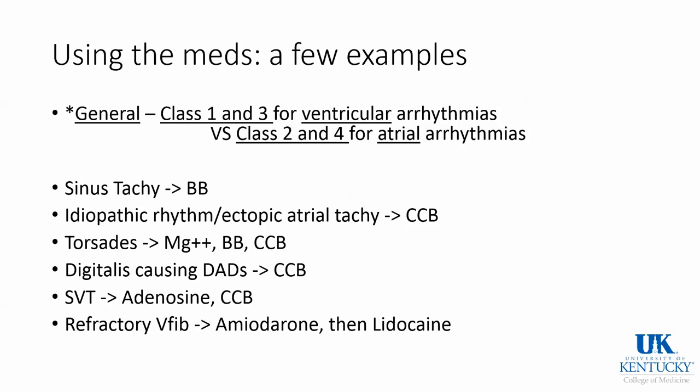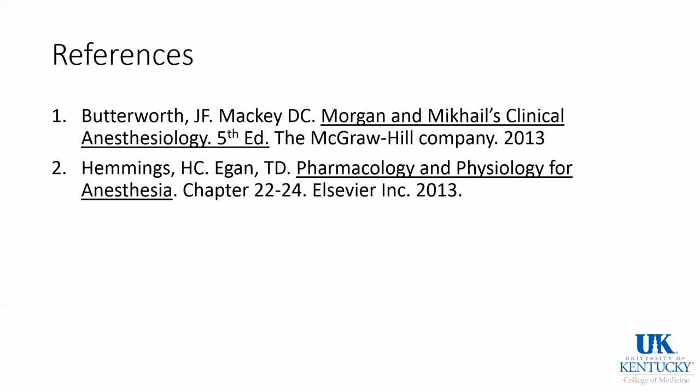To summarize common clinical examples: Class 1 and 3 are for ventricular arrhythmias; Class 2 and 4 are for atrial arrhythmias — beta blockers and calcium channel blockers respectively. For sinus tachycardia, we use a beta blocker. For ectopic atrial tachycardia, calcium channel blockers are appropriate. For torsades, we classically give magnesium. Digitalis-induced delayed after-depolarizations can be treated with calcium channel blockers. For SVT after a vagal maneuver, adenosine is the drug of choice. For refractory V-fib, amiodarone is first choice and lidocaine is second. Thank you for listening. Have a nice day.